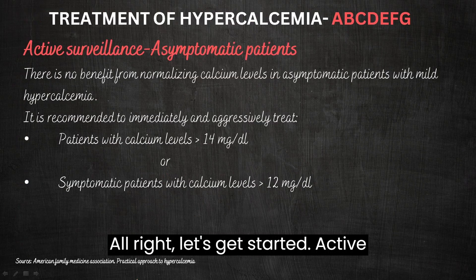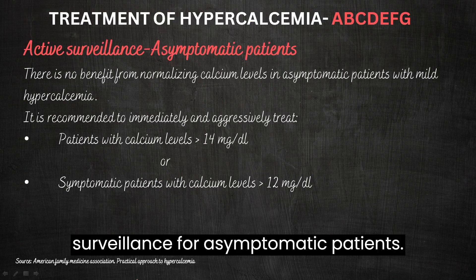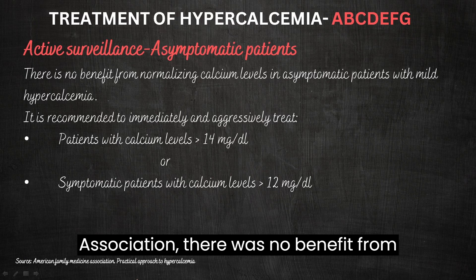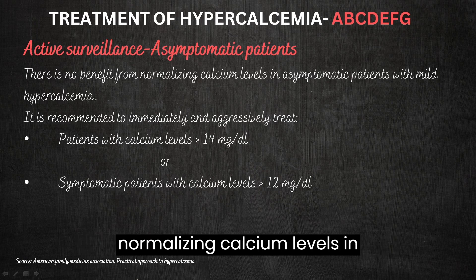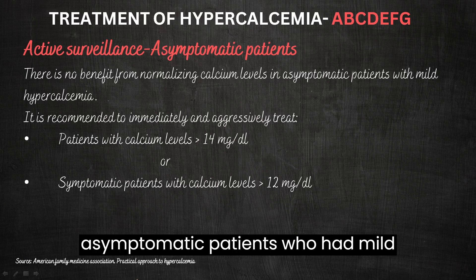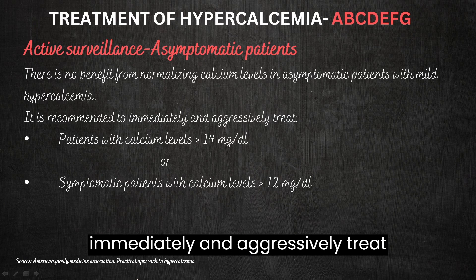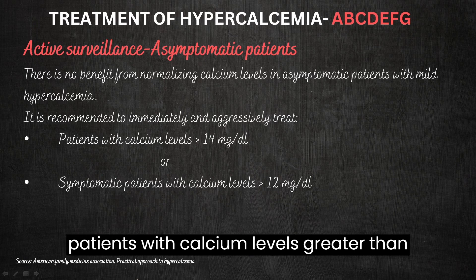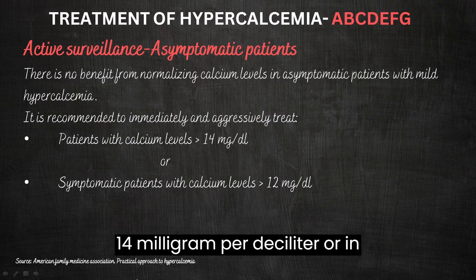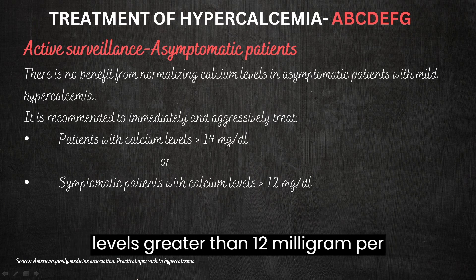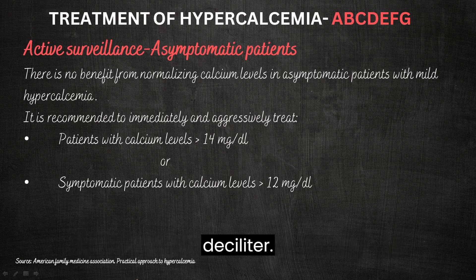Active surveillance for asymptomatic patients. According to the American Family Medicine Association, there was no benefit from normalizing calcium levels in asymptomatic patients who had mild hypercalcemia. It is recommended to immediately and aggressively treat patients with calcium levels greater than 14 mg per deciliter, or any symptomatic patients with calcium levels greater than 12 mg per deciliter.